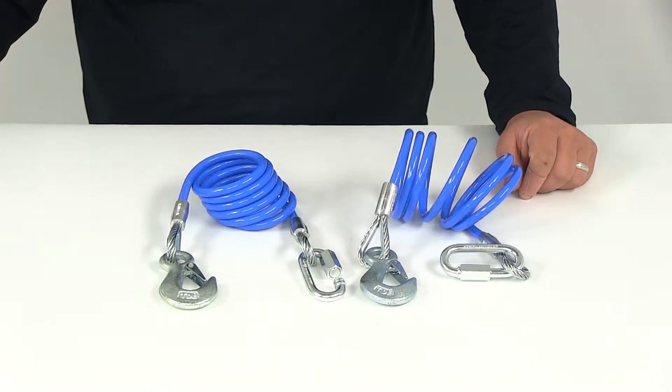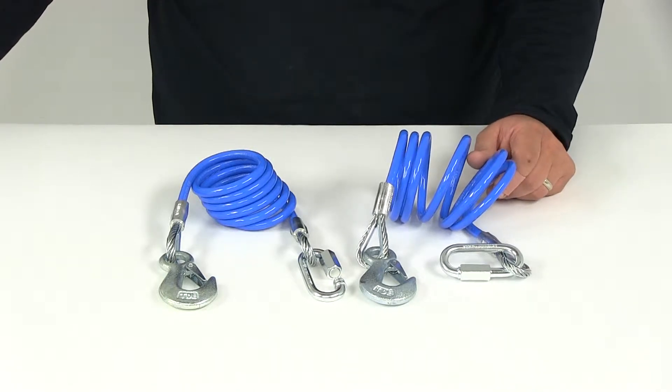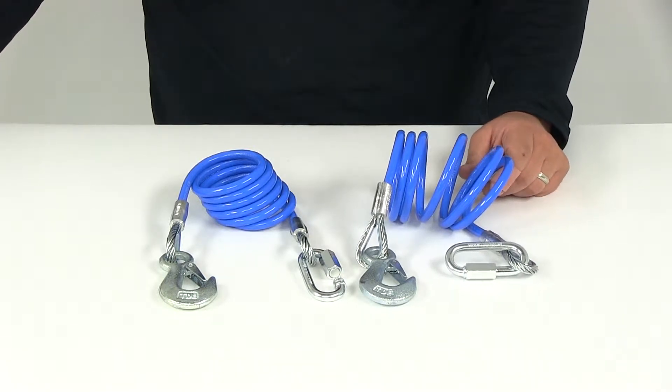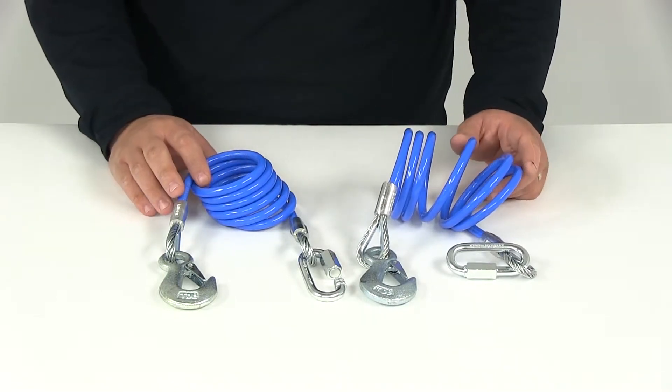Today we're reviewing part number RM-643, the Roadmaster 68 inch single hook coiled safety cables. They have a capacity of 6,000 pounds and offer extra security for your tow system.